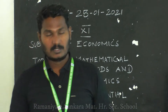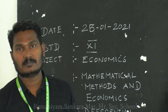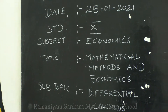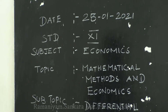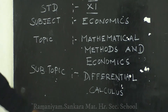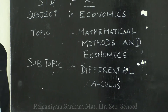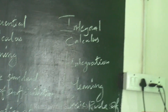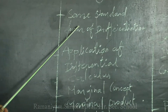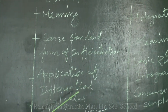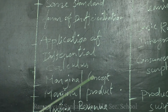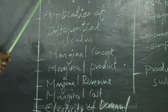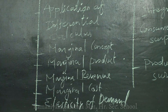Good morning, my dear students. In the previous section I explained chapter 12. Today I'll be teaching the same chapter — chapter 12: Mathematical Methods for Economics. The subtopic is differential calculus. Under differential calculus, the subtopics we are going to discuss include standard forms of definitions, applications of differential calculus, and marginal concepts — marginal product, marginal revenue, marginal cost, and elasticity of demand.